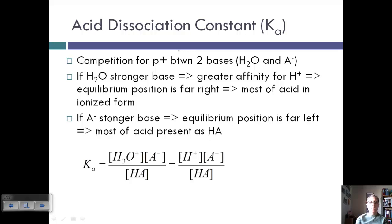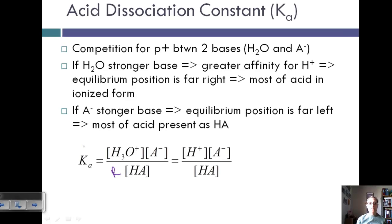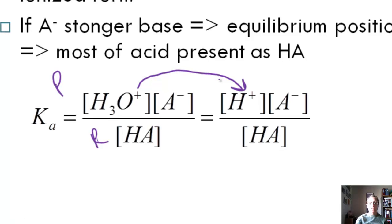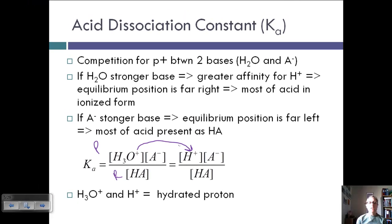We can write the Ka value as here's our reactant, and here's our products. Now we're not considering water, because water is a liquid, and we only want to look at aqueous or gaseous components. You'll notice that we can write H3O+ as H+. H3O+ and H+ are considered hydrated protons. We use H+ more often, but just remember that it is actually bonded to a water molecule, giving it this H3O+, which is why we consider it to be hydrated.